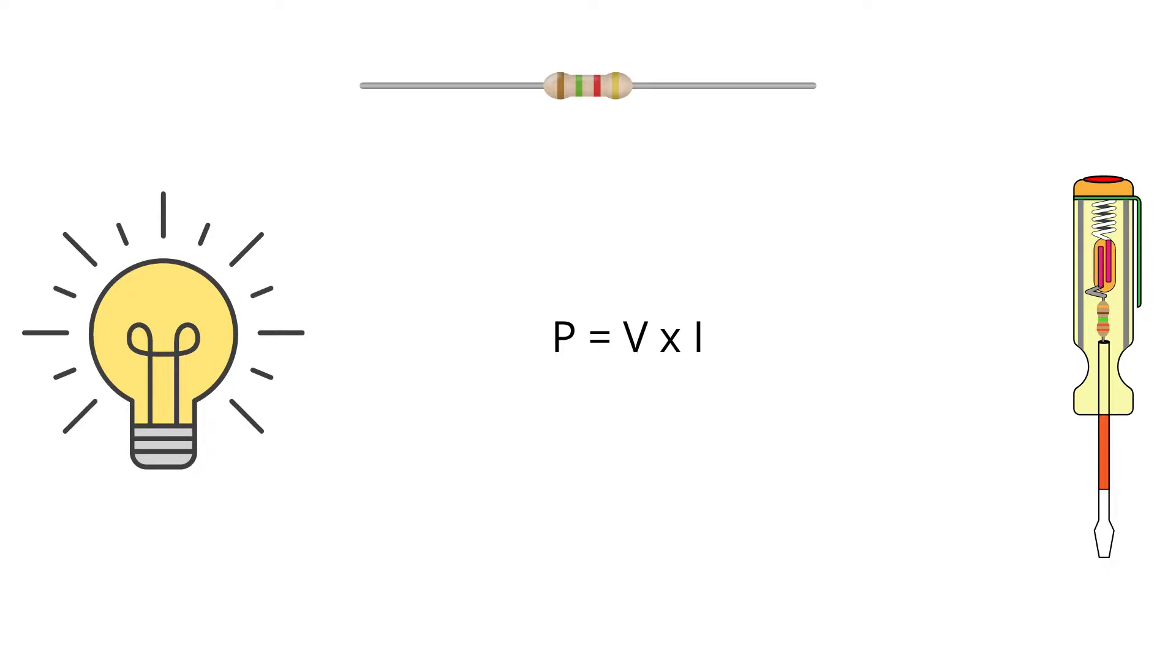So in place of Q by T, we can simply write current. Now our equation becomes P equals V multiplied by I, or power equals voltage times current, where the unit of power is watt, the unit of voltage is volts, and the unit of current is amps. This is the relationship between power, voltage, and current.